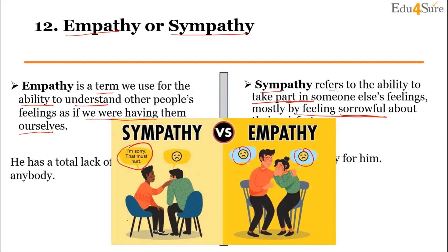The difference between both should now be clear. The trick to remember: Empathy starts with E — associate it with 'experience', as if you are experiencing others' feelings yourself. Sympathy starts with S — associate it with 'support'. You are only supporting someone in their misfortune, but you don't experience that feeling yourself.